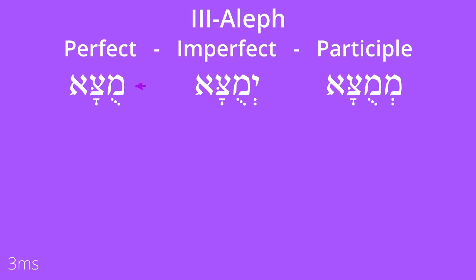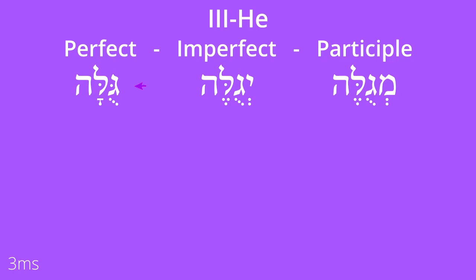Wherever the dagesh forte can exist we'll see it; otherwise we'll see virtual doubling or compensatory lengthening. For a third-aleph verb, for example, matzah — no surprises — we get mutzah in the perfect, yumutza in the imperfect, and mimutza as the participle. For third-hey verbs, look at gala: gula in the perfect, yagule in the imperfect, migule as the participle — everything is exactly as we would expect.